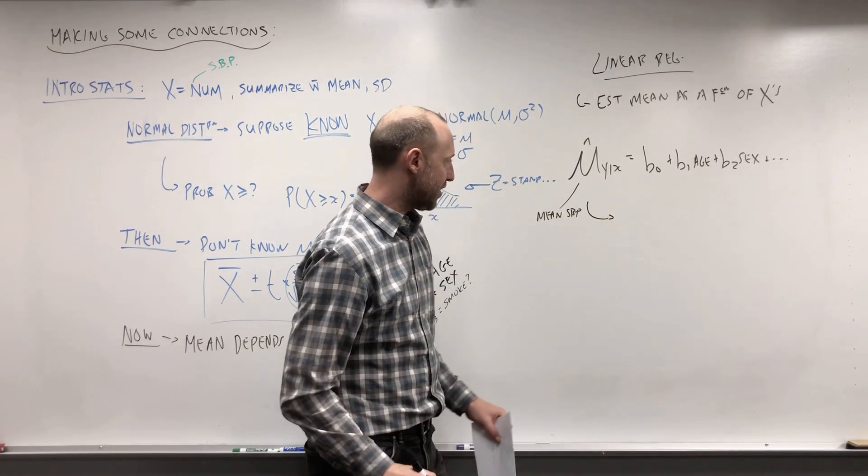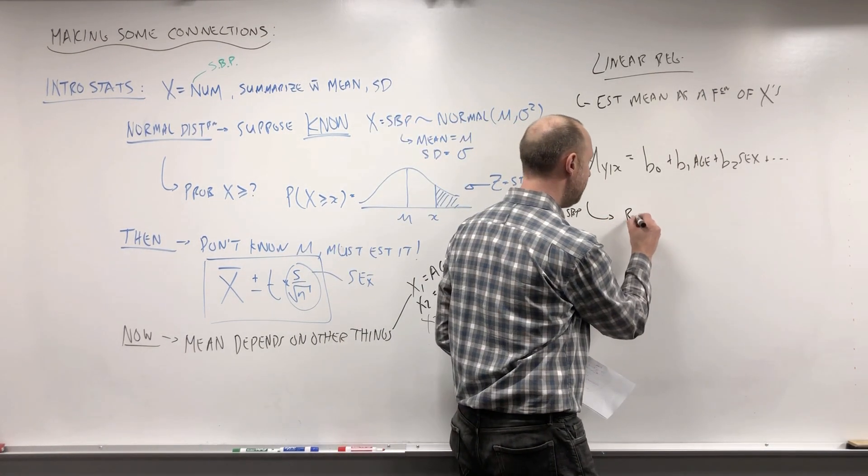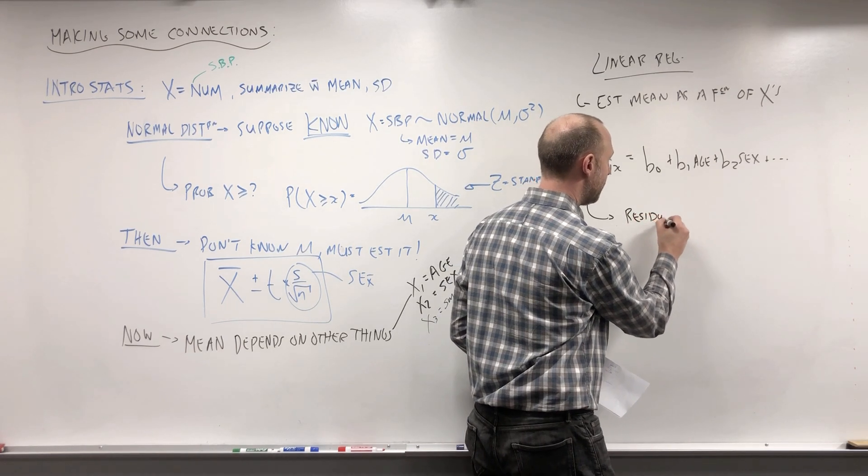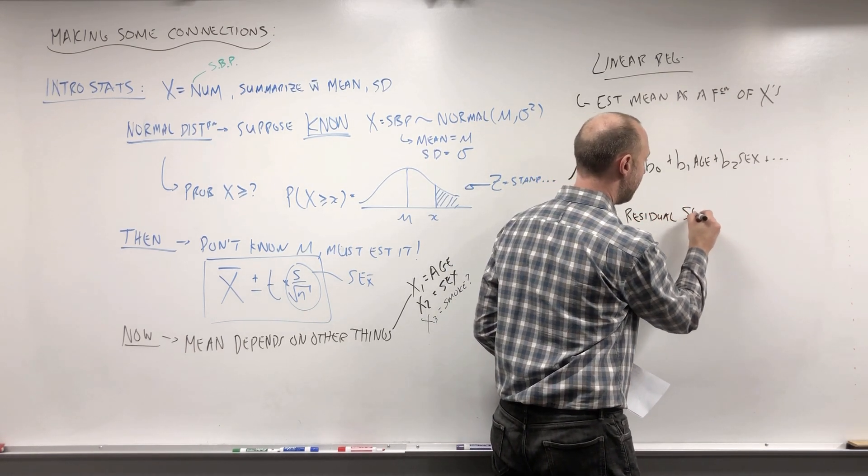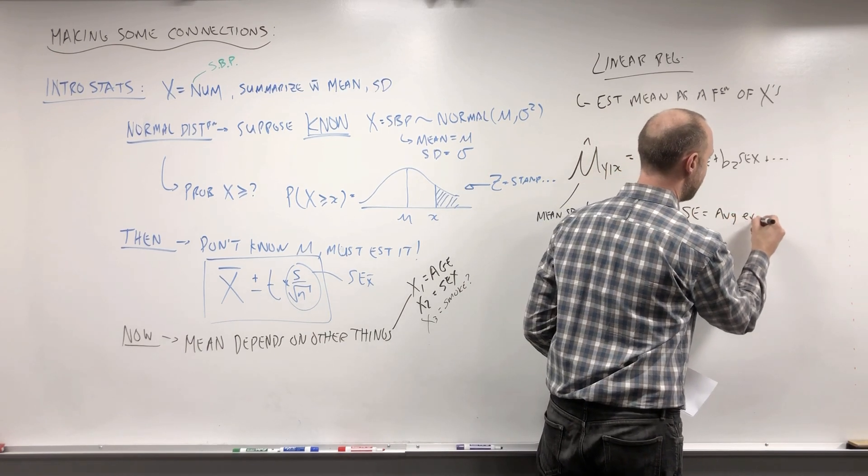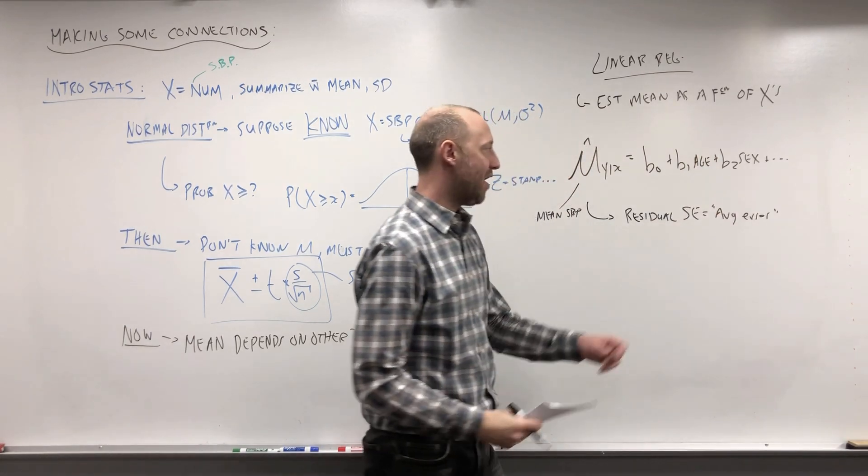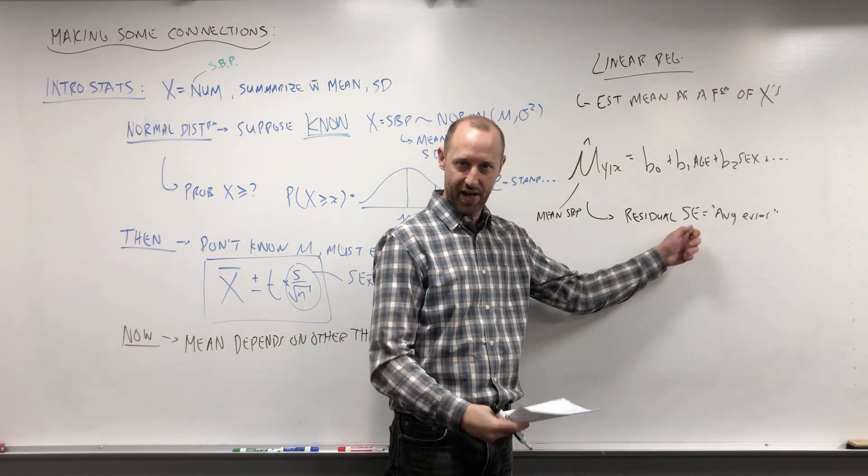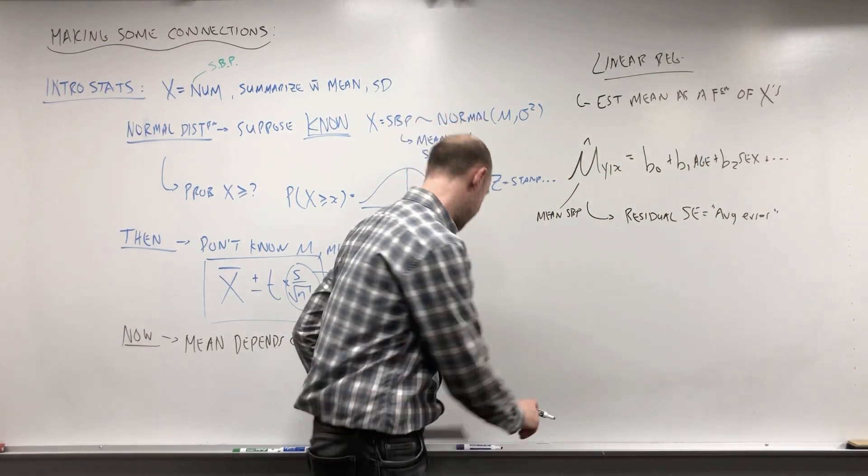And from this linear regression model, recall we also get this residual standard error, which we can think of sort of as being the average error. On average, how far are people getting from that regression line, or what's the kind of average deviation?